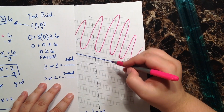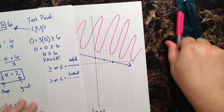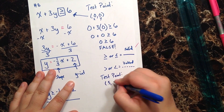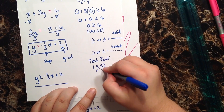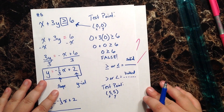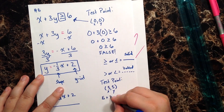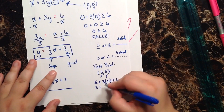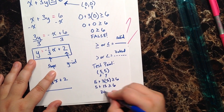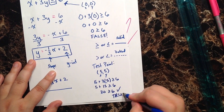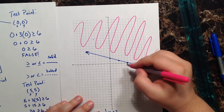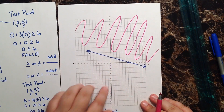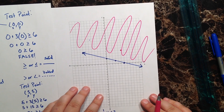To verify, let's choose a point well above the line — say (5, 5). Using our original inequality: 5 + 3(5) ≥ 6, which is 5 + 15 ≥ 6, or 20 ≥ 6. Yes, that is a true statement. Since (5, 5) is well above the line and gives a true statement, any point chosen above this line will also give a true statement for this inequality.